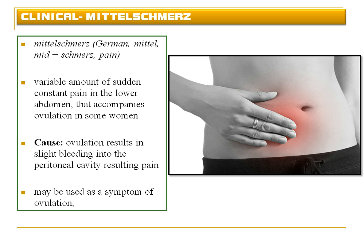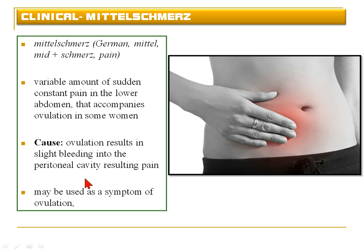At the phase of ovulation, there may be slight bleeding into the peritoneal cavity which can result in pain. This pain occurring during ovulation is known as Mittelschmerz — in German, 'Mittel' means mid and 'schmerz' means pain. It is a variable amount of pain in the lower abdomen during ovulation. It may be used as a symptom of ovulation but is not an exact indicator; better indicators include a decrease in basal body temperature.